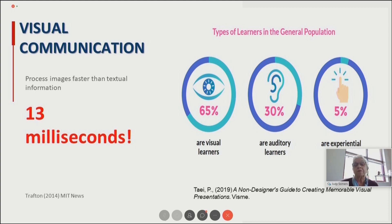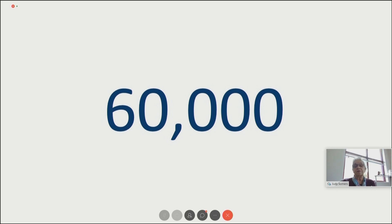We also did some tests when I was teaching in the elementary school, and there are a larger number of experiential learners. So obviously, it's something that changes as we grow up. Another number I found totally incredible: we process visuals 60,000 times faster than we do text. And if that's the case, then why do we wind up putting so much text in front of our audience?